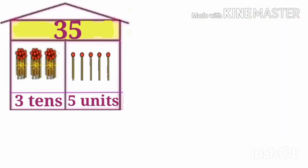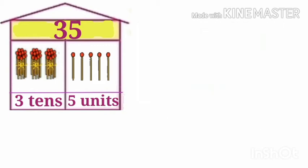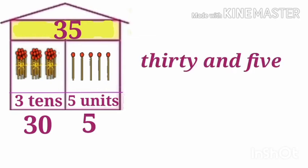Here, in the number 35, we have 3 in the tens place. If we open 3 tens bundles, we get 30 units. That is why the place value of 3 in the number 35 is 30. As 5 is in the units place, its place value is 5. So, 30 and 5 is 35.